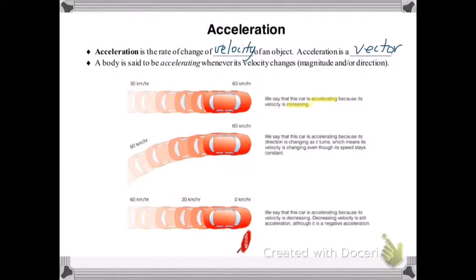In the second case, you can see that the car is remaining at 60 km per hour. Its speed is constant, but its velocity is changing because its direction is changing and therefore there is a change in velocity which means that it is accelerating even though its speed stays constant.